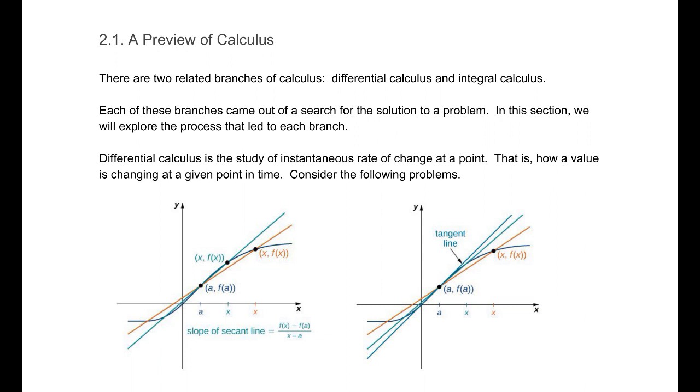The first is differential calculus. Differential calculus is the study of instantaneous rate of change at a point. That is, we want to know the slope of a function at a particular point. In this example, we want to know the slope of this point right here, the point (a, f(a)). We want to know the slope of that green line, the tangent line. All these other lines intersect that function at two places. This orange line crosses twice there. That is called a secant line.